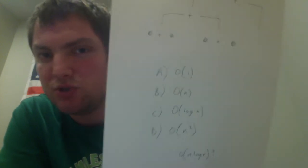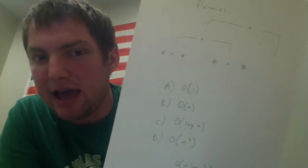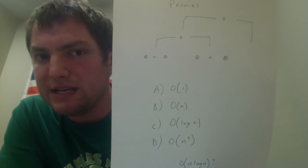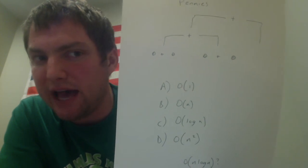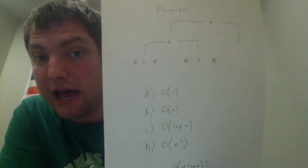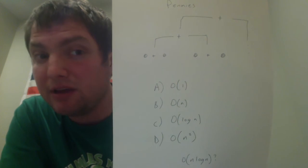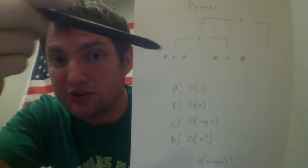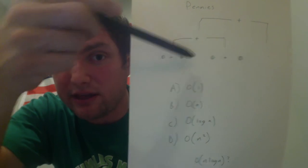What did you guys think it was — A, B, C, or D? How many times do you have to add total to add up all the pennies in a binary tree? Keep in mind we're assuming that you do have to add each individual thing. The pennies could be individual numbers, you can't skip any of the additions — you actually have to process all of them.